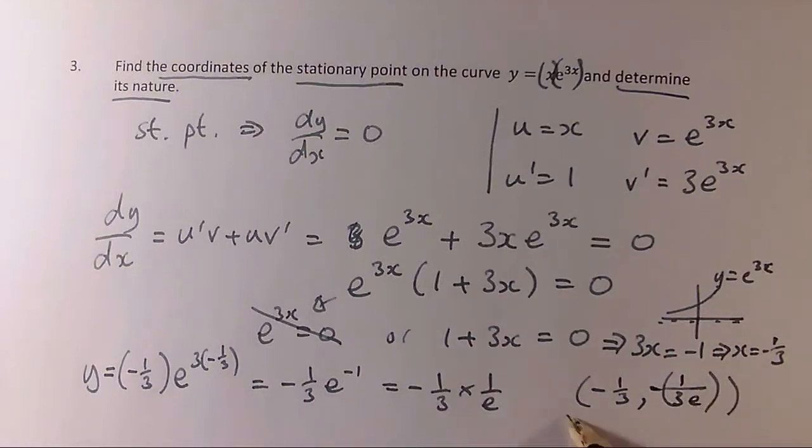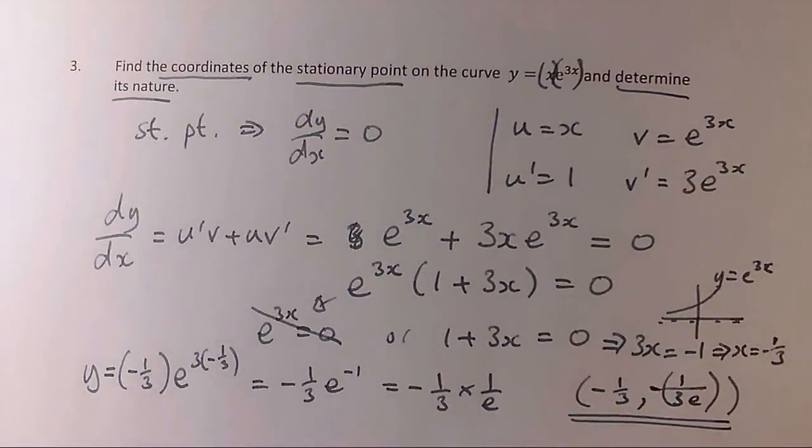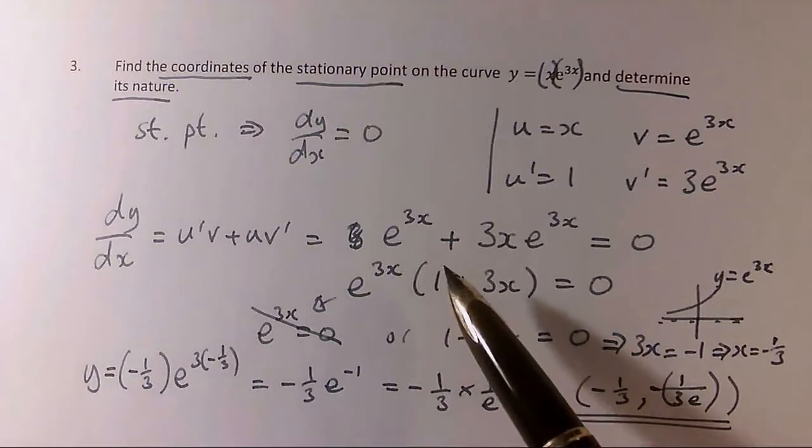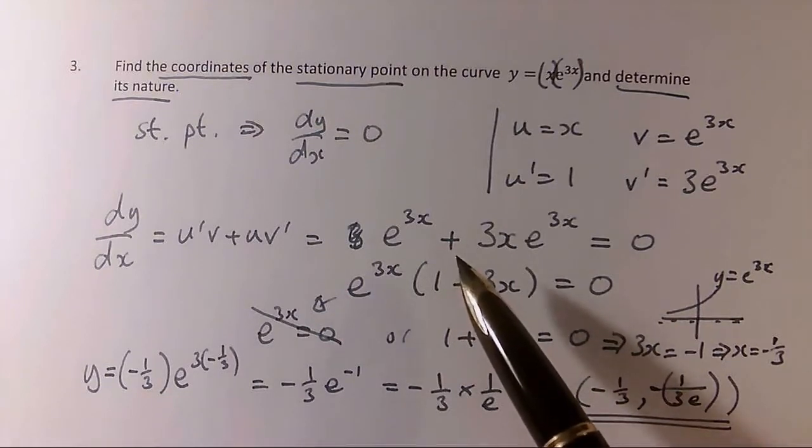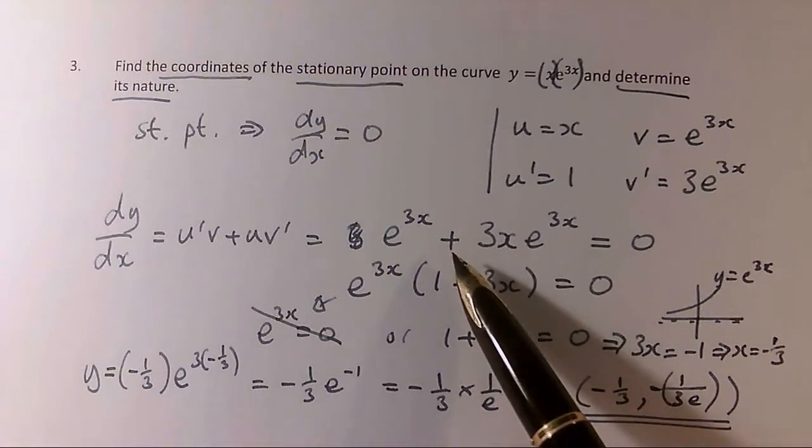So I've done the first part. I have the coordinates of the stationary point, but I haven't yet determined its nature. Now, for this, we're going to use the second derivative. So I'm going to have to find out where I found dy/dx. So here it is clearly labeled here. I have to differentiate this again and check this out. And if it's positive or negative, that will give me a handle on what kind of stationary point it is. So I have to differentiate this again.